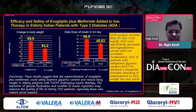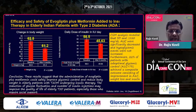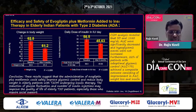In the elderly, we are always concerned about drug side effects, and DPP4 inhibitors really shine because of their placebo-like side effect profile. Evogliptin has been tried with insulin therapy in elderly patients with type 2 diabetes. The conclusion was that administration of evogliptin plus metformin could safely improve glycemic control and body weight in elderly patients with type 2 diabetes undergoing insulin therapy.